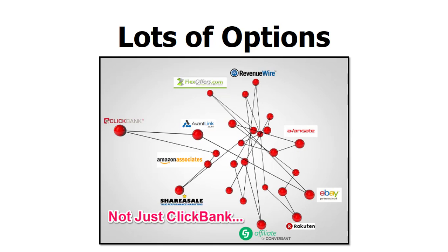Now, that was just one — ClickBank. There are lots of different affiliate networks out there. If you type 'affiliate network' into Google, you will be off to the races. There will be tons and tons of different options for you.